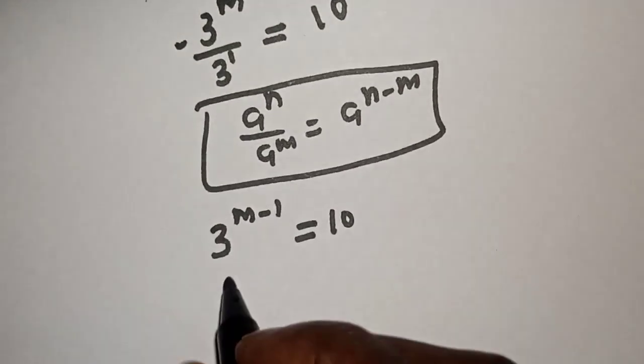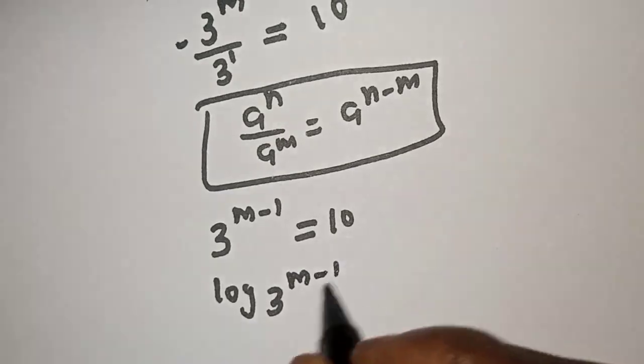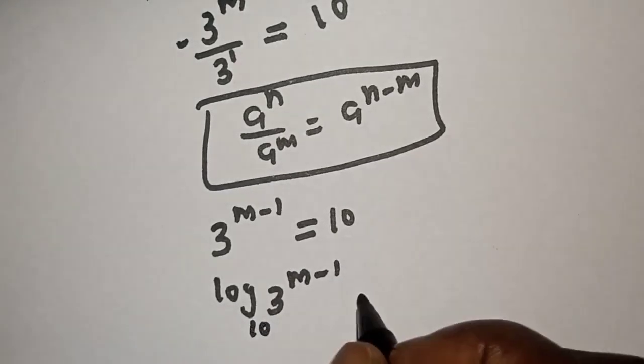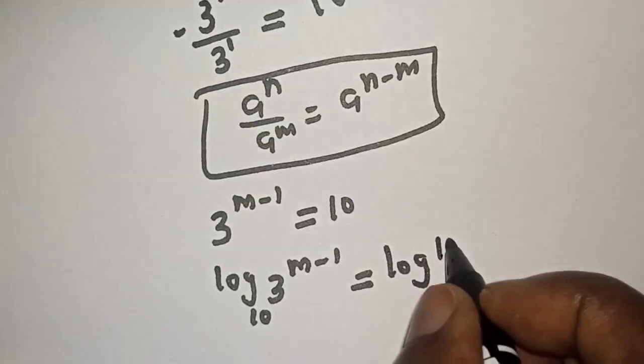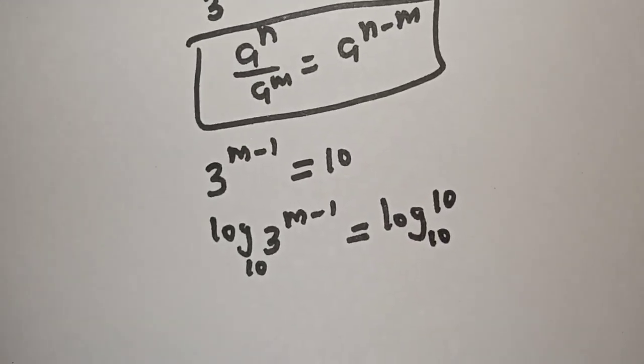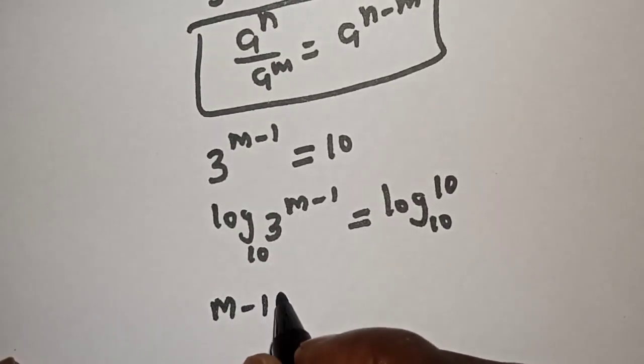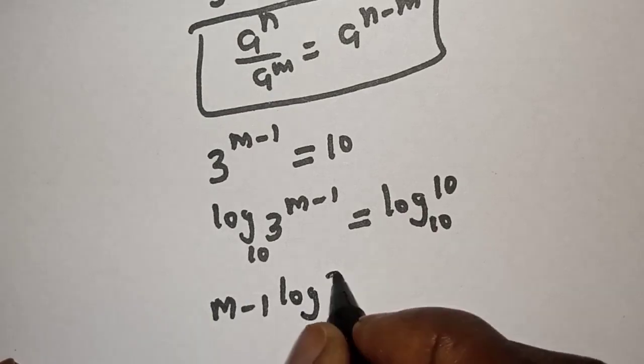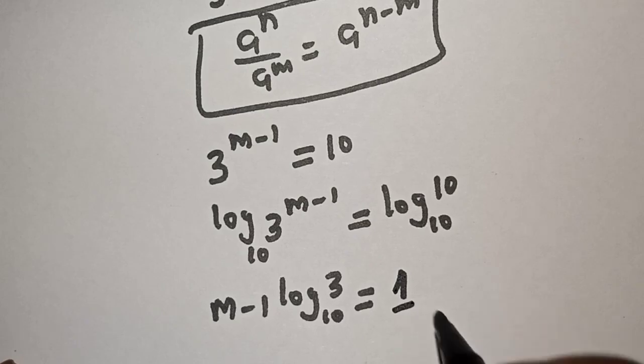Let's take the log of both sides. Log 3 raised to power m minus 1, let's use base 10, is equal to log 10 base 10. And this is what? 1.